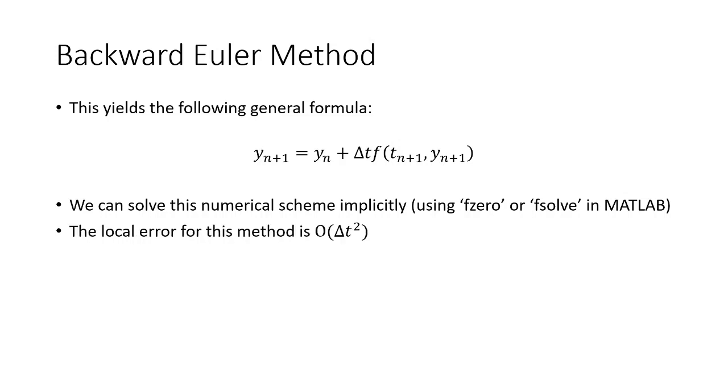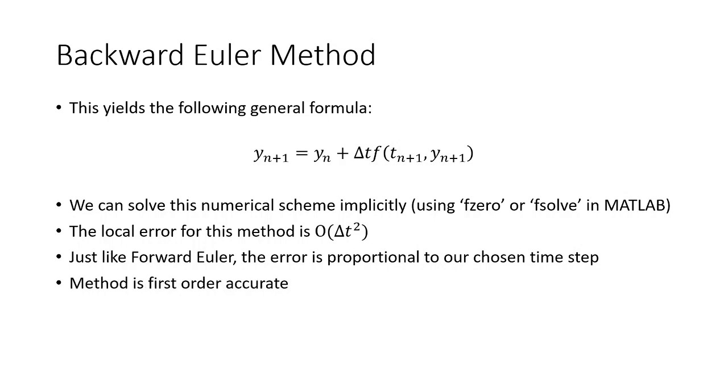The local error for this method is on the order of delta t squared, same as the forward Euler method. And just like the forward Euler method, the error is proportional to our chosen time step. First order accurate method.